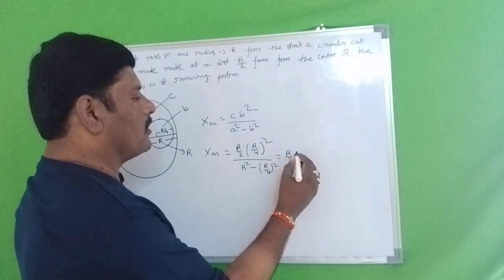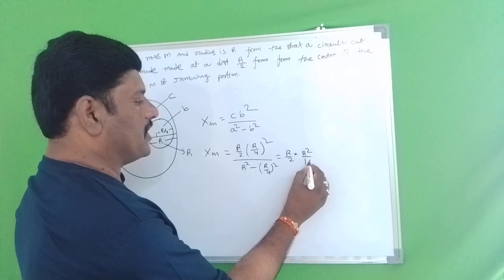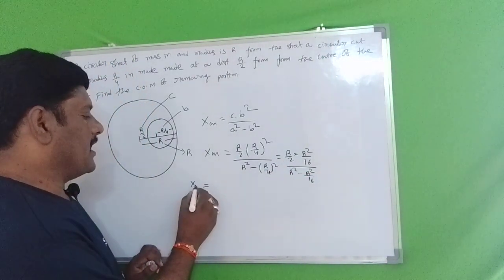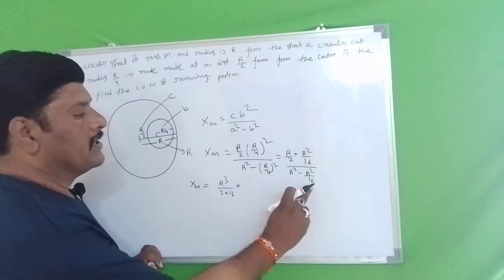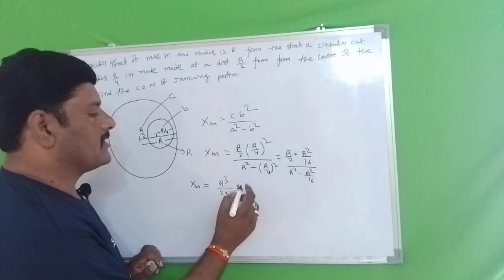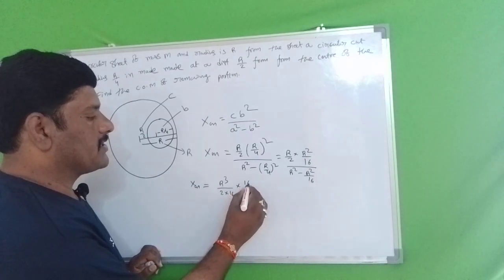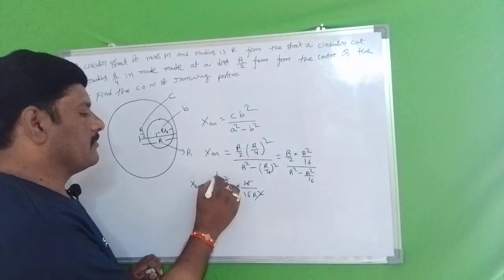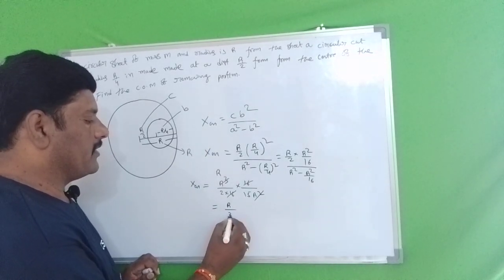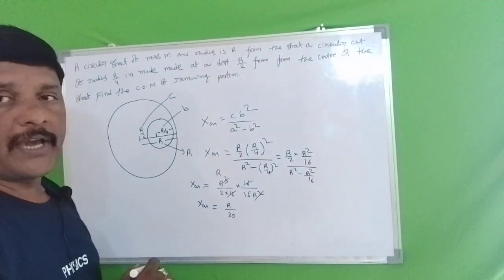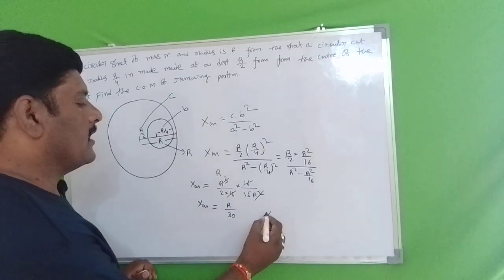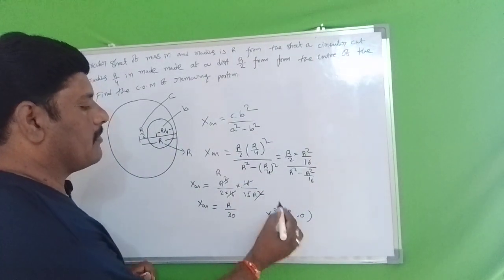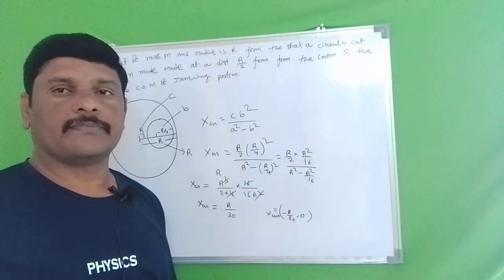Now we simplify: XCM equals R/2 times (R/4)² divided by (R² minus (R/4)²), which gives R²/16. Simplifying further: 16R² minus R² equals 15R². So XCM equals R/2 times (1/16) divided by (15/16), giving XCM equal to R/30.